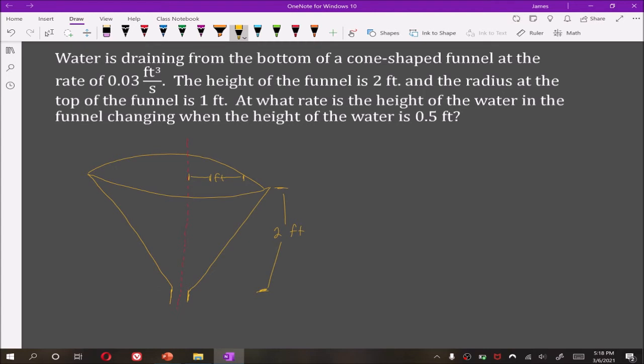Now let's say this is where the water is currently located. Well then this distance here we'll call h, so that's the height of the water, and when it's at that height it's gonna have a radius call it r.